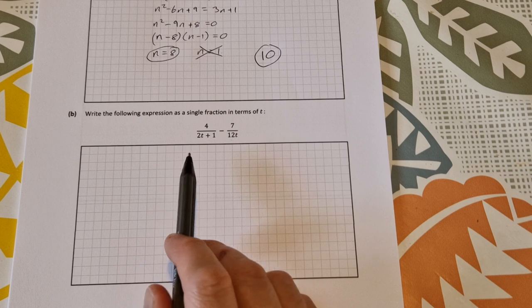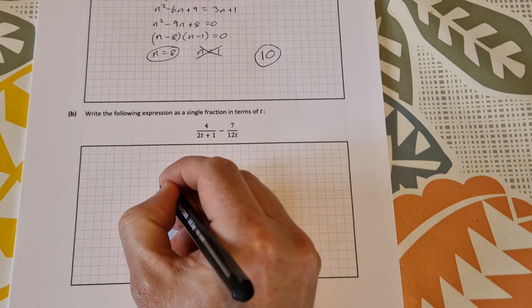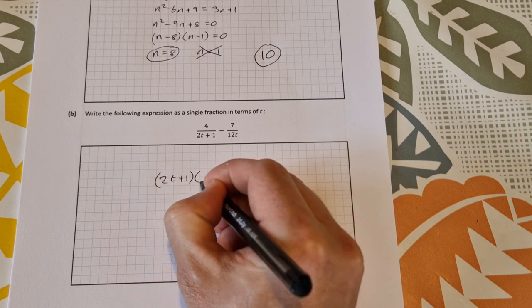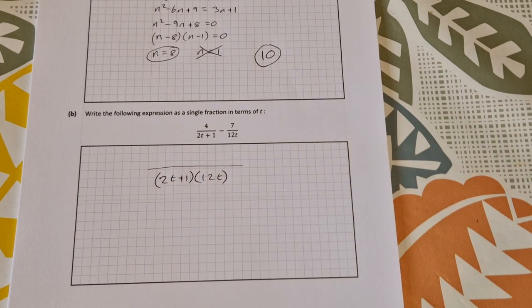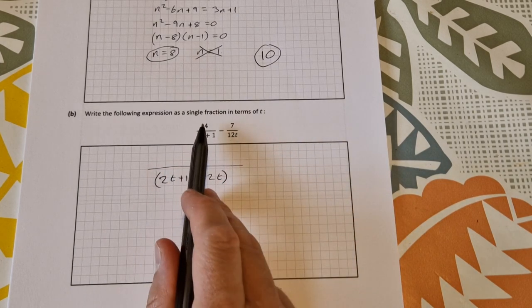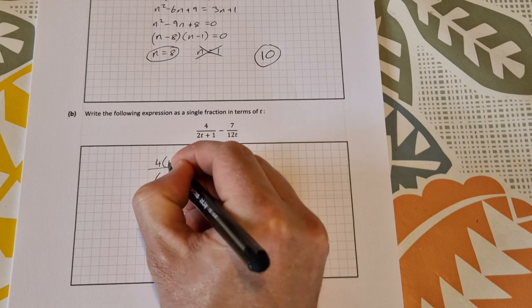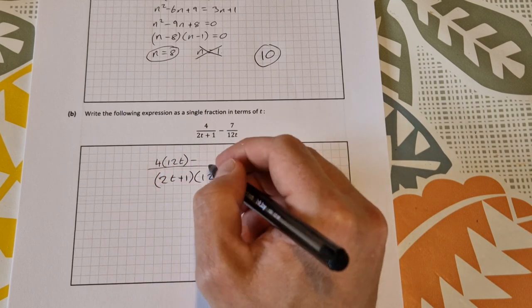So the common denominator will simply be 2t plus 1 times 12t so it's going to be 2t plus 1 times 12t and then for the numerator it'll be 4 multiplied by 12t minus 7 multiplied by 2t plus 1.